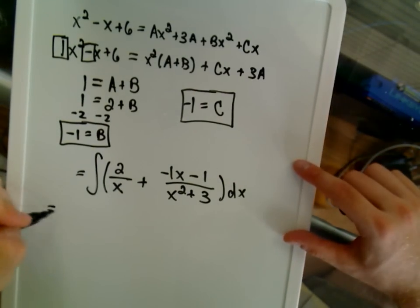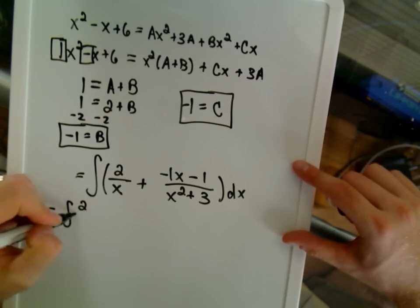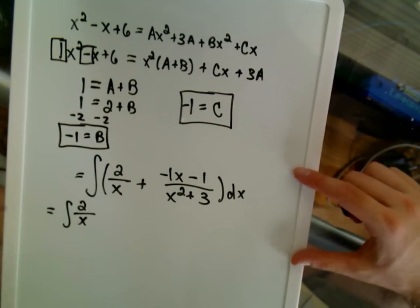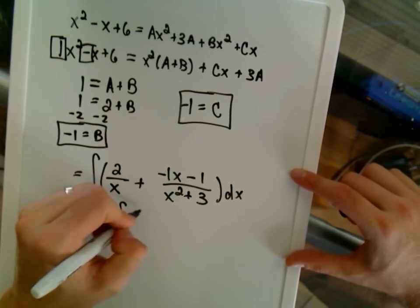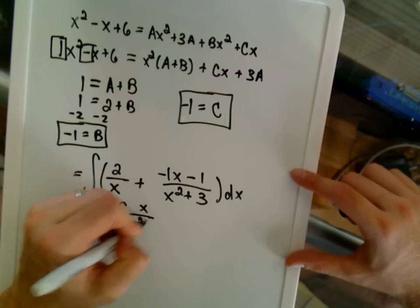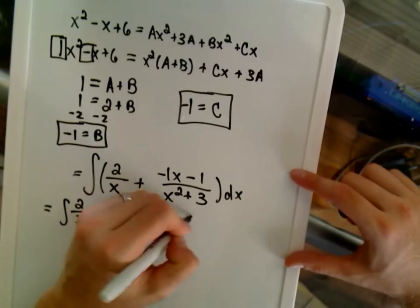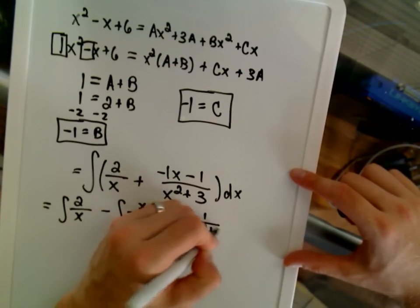And all we do at this point is really just bust up our partial fractions. We'll integrate 2 over x by itself. I'll factor the minus out and have x over x squared plus 3, and then minus the integral 1 over x squared plus 3.